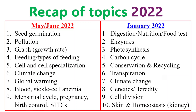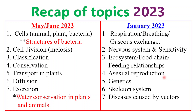For the May/June 2023 examinations, we have cells — included in terms of animal, plant, and bacterial cells, with a comparison between all three. There were structures of bacteria specifically, and they gave quite a number of questions relating to that. You also have cell division, specifically meiosis, classification, conservation, transporting in plants, diffusion, and excretion. That was extensively testing the conservation of water in plants and animals.